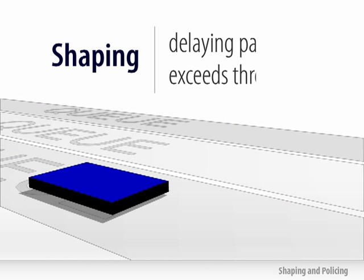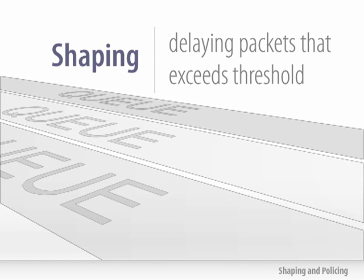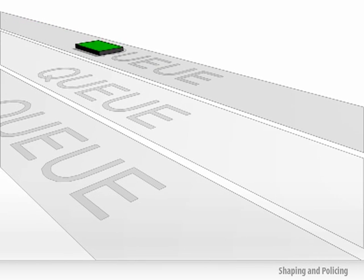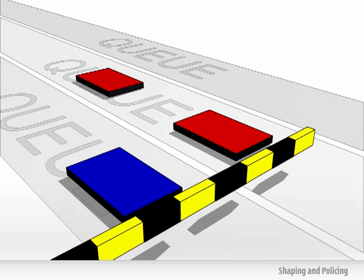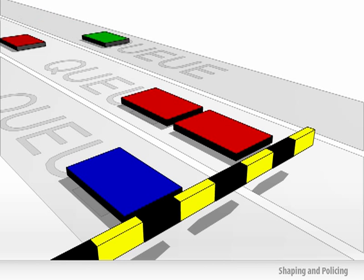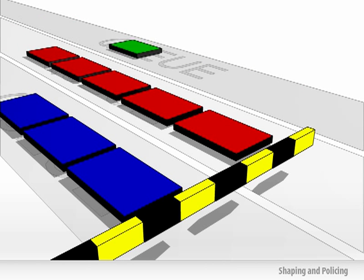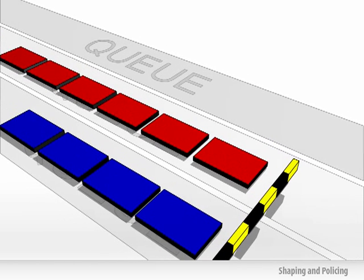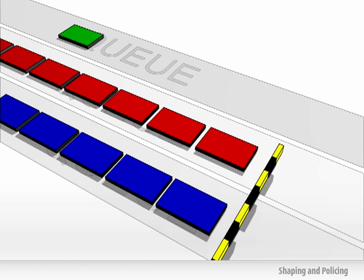Shaping involves delaying packets that exceed a certain threshold. These packets are held in the queue until a later time when they can be sent out. This has the effect of smoothing out bursts, but unlike policers, shaping will attempt to not drop packets in the process. If there is congestion or a large amount of traffic, however, the queues may overflow, causing dropped packets.